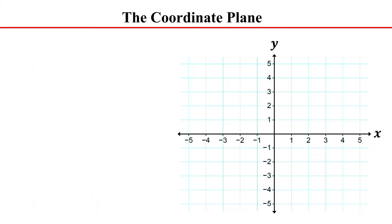The coordinate plane is a two-dimensional surface formed by two number lines that intersect at a right angle. The horizontal number line is called the x-axis and is labelled as x. The vertical number line is called the y-axis and is labelled as y.